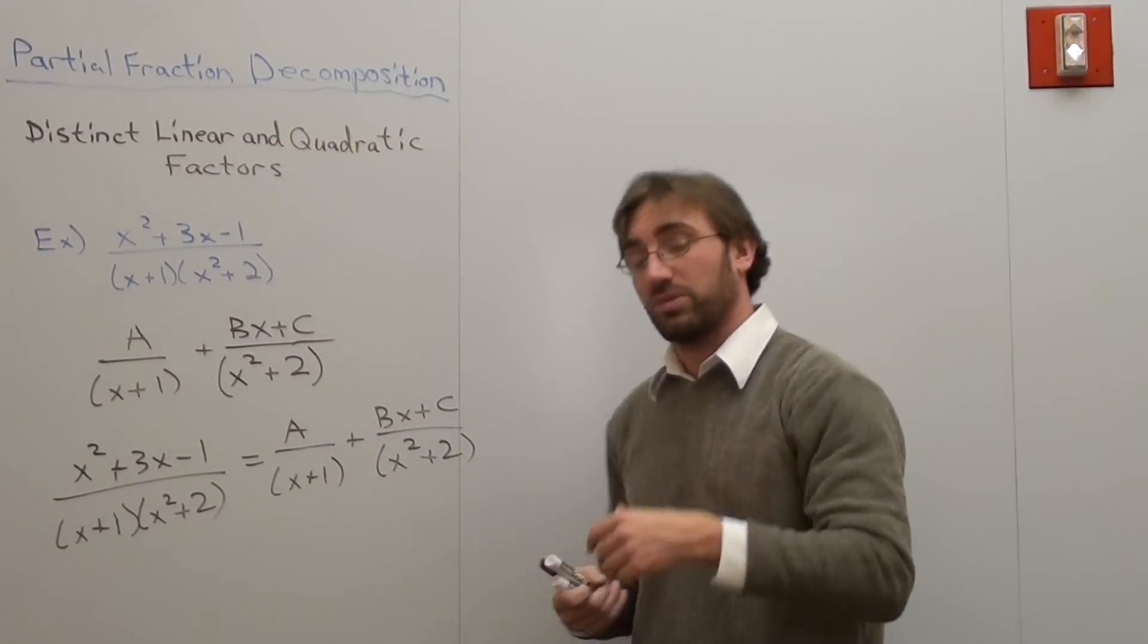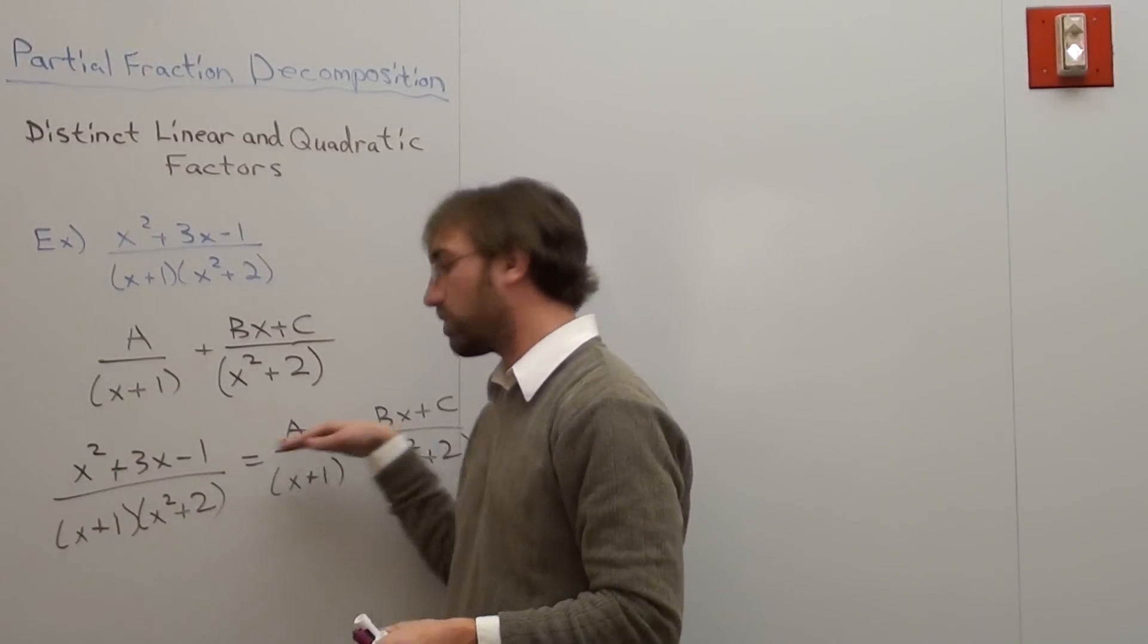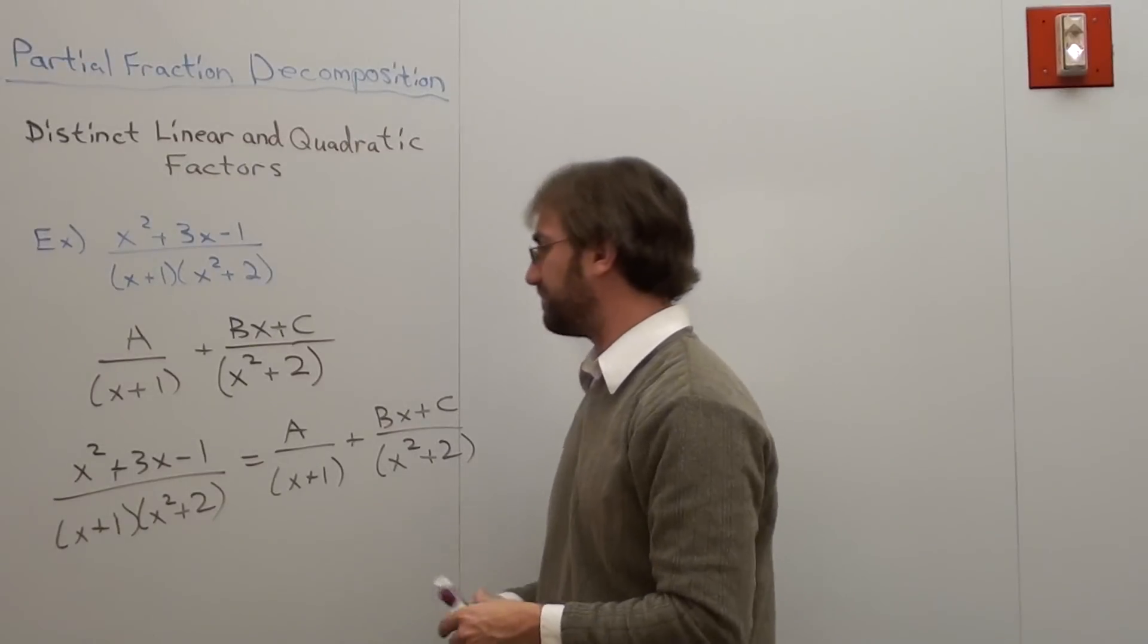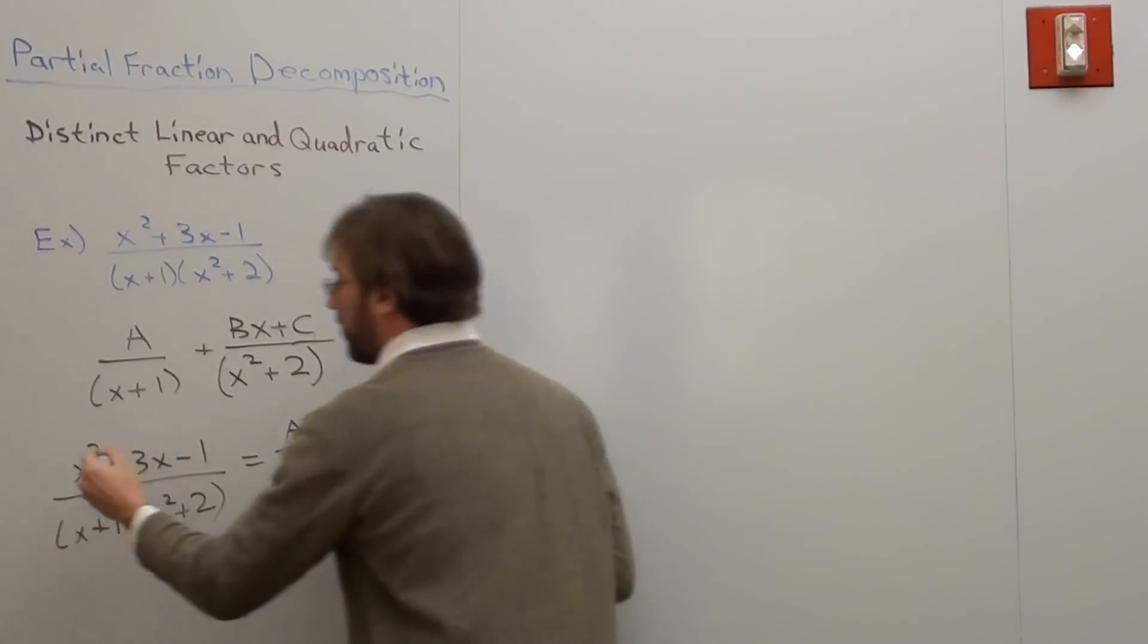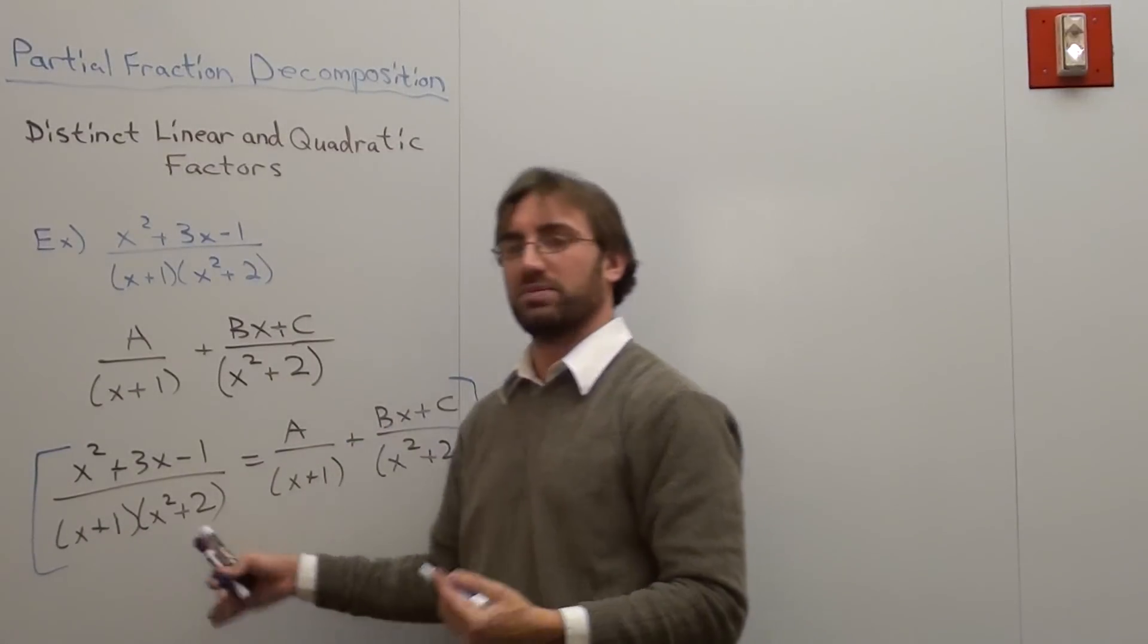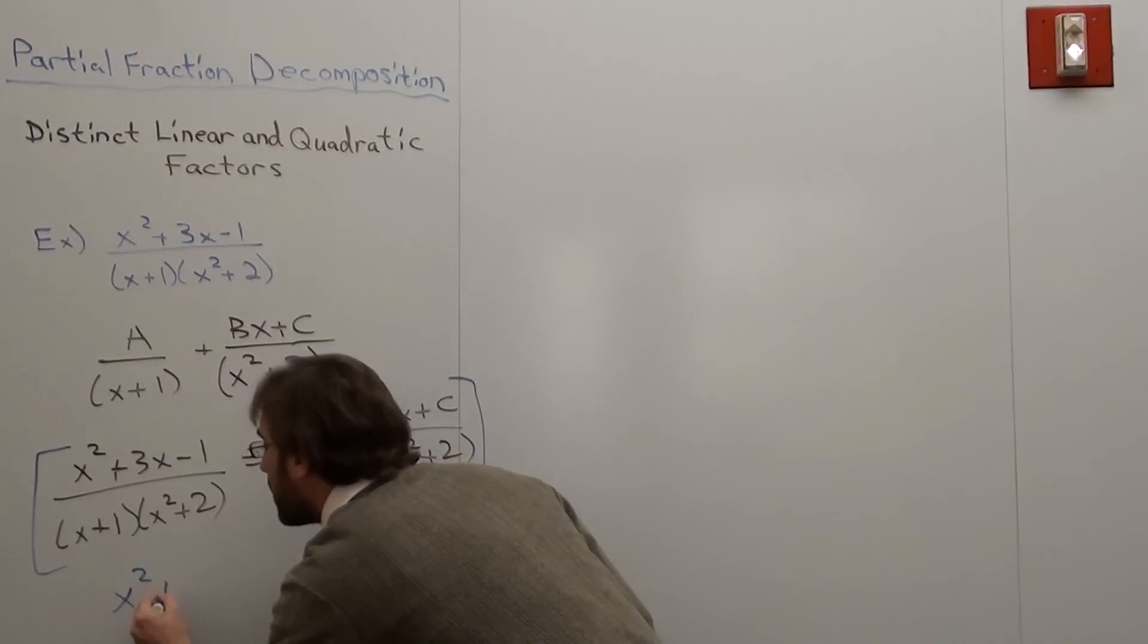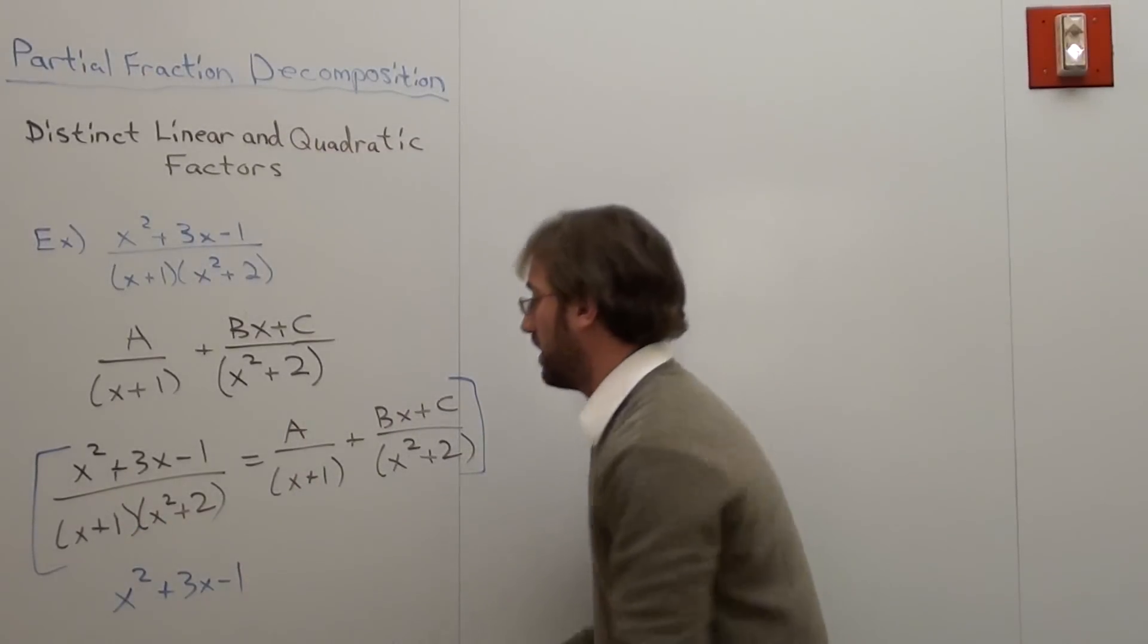So what I'm going to do is I'm going to try to get rid of the denominators. And how I do that is I multiply every term in this equation by this denominator. And I went ahead and did that in the second lesson. And what happens is when I multiply all of this by x plus 1, x squared plus 2, is I get x squared plus 3x minus 1. Those cancel.